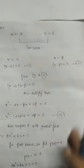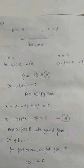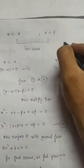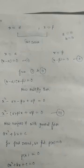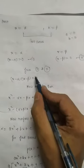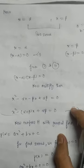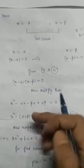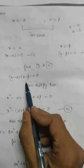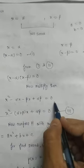From equations 1 and 2: since x − alpha = 0 and x − beta = 0, their product also equals zero (because anything multiplied by 0 is 0). So we can write (x − alpha)(x − beta) = 0. Multiplying out: x² − alpha·x − beta·x + alpha·beta = 0.